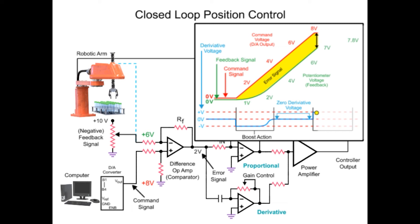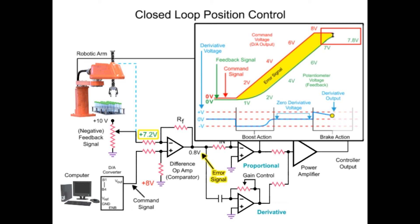If the error signal decreases too fast, the derivative voltage will be greater than the proportional voltage. When this occurs, the polarity of the power amp is reversed, creating a brake condition to prevent overshooting the desired position. As the arm continues in motion, the feedback voltage nears the command voltage, and the error signal from the difference op-amp is also decreasing. As a result, the arm motor speed decreases.